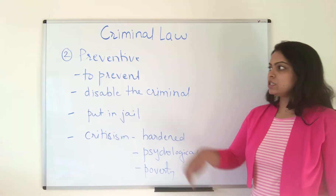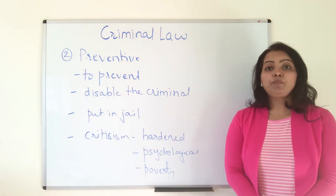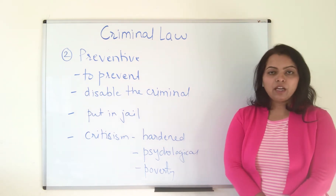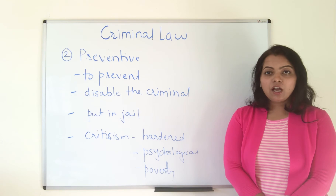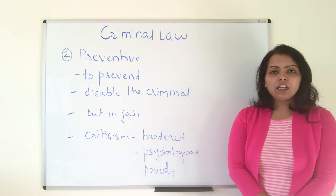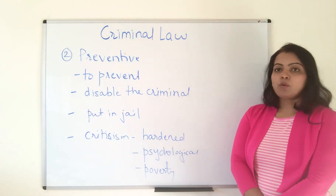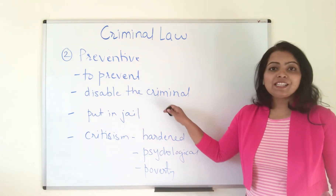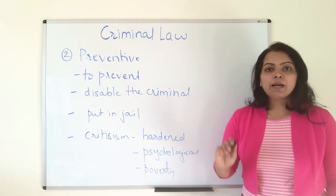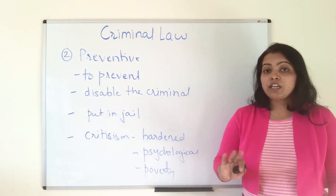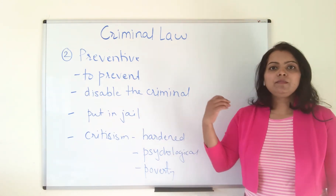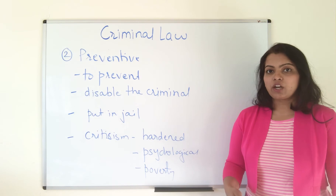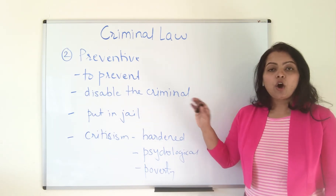The next theory is preventive theory. The purpose of this theory is to prevent the wrongdoer from committing the crime again. If a person commits theft, then his hand will be taken away so that he cannot commit the same crime again — though earlier this was a crude approach that later refined. A person can be prevented by disabling the criminal: for rape, mutilation is the punishment; for theft, keeping the person in jail so he cannot commit the crime again. This theory believes in disabling the criminal or imprisonment.